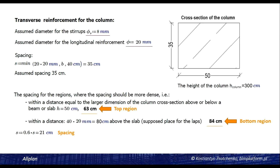Here is the task. As an example we will consider a column. You can see the part of the computation for the transverse reinforcement done in accordance with Eurocode. The column with dimensions 35 and 50 cm and height 3 m should be reinforced with the principal reinforcement — steel bars with an assumed diameter of 20 mm and an assumed diameter for the stirrups of 8 mm. There will be three regions in terms of transverse reinforcement spacing: the top and bottom regions with spacing of 21 cm and 35 cm as spacing for the middle region of the column.